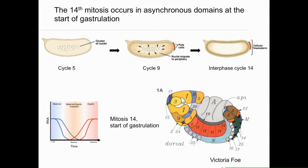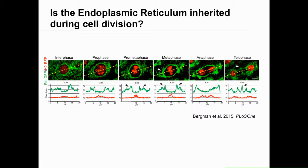We really started looking into this question not necessarily to answer questions of asymmetric cell division, but to ask a basic question: is the endoplasmic reticulum inherited during cell division? Work from my lab and others has outlined that the ER goes through a dramatic reorganization in both its structure and localization during mitosis.